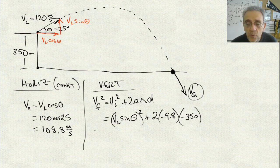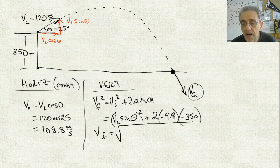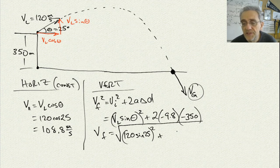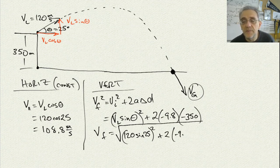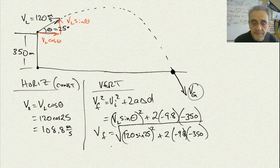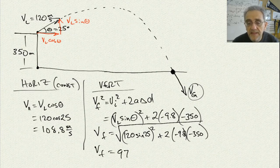To get V final, we're going to have to take the square root of all that. So it's the square root of 120 sine 25, all squared, plus 2 times negative 9.8 times negative 350. The negatives cancel out, and our answer for final vertical velocity ends up being 97.1 meters per second.